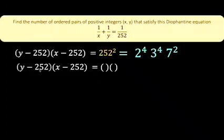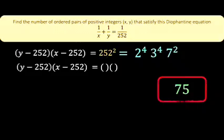And therefore, we now say that y minus 252 here must be positive, x minus 252 here must be positive, and the product is also positive 252 squared. There are 75 of them.